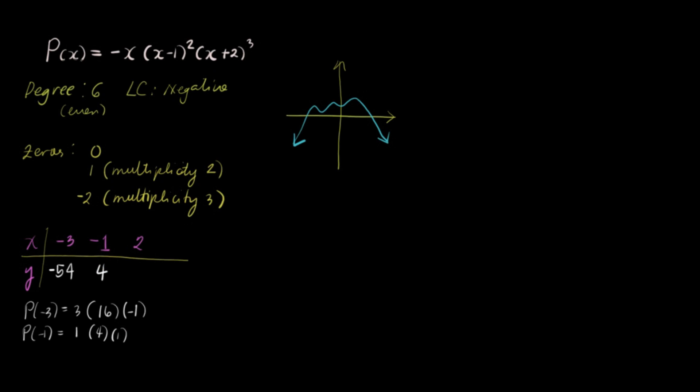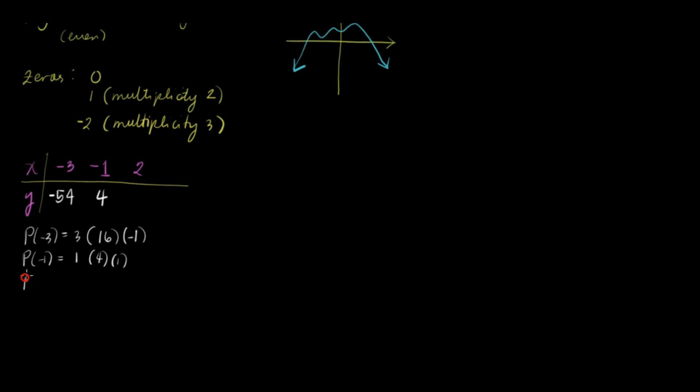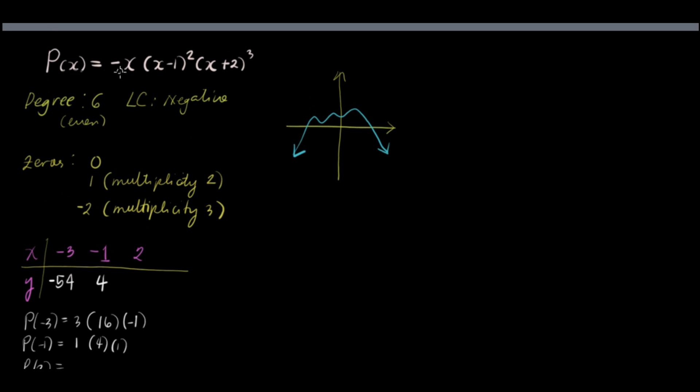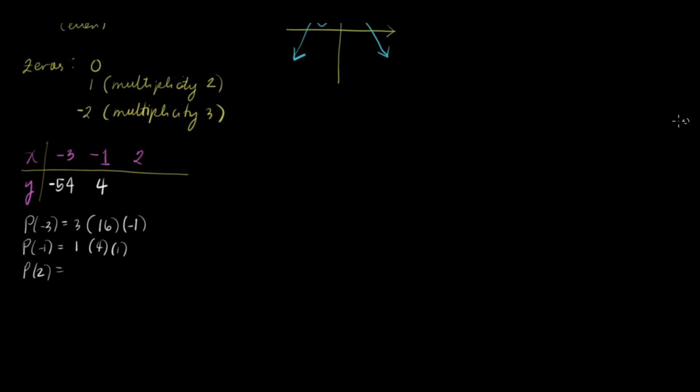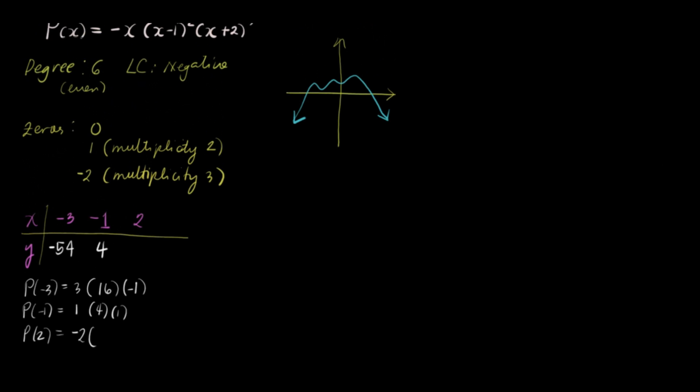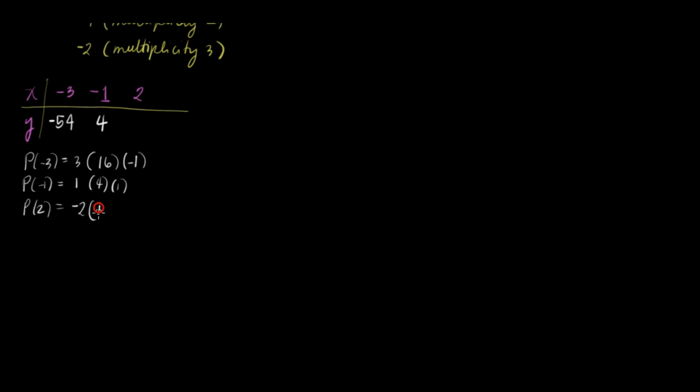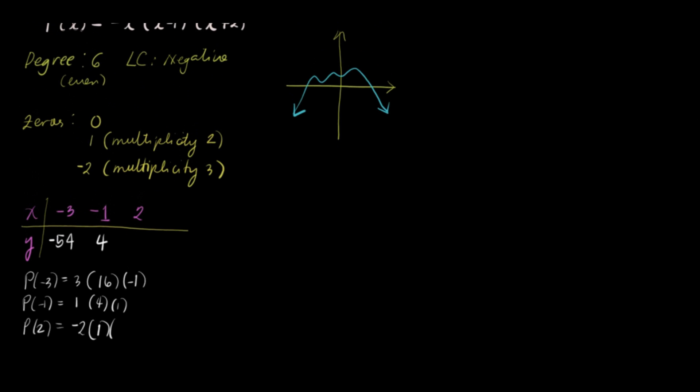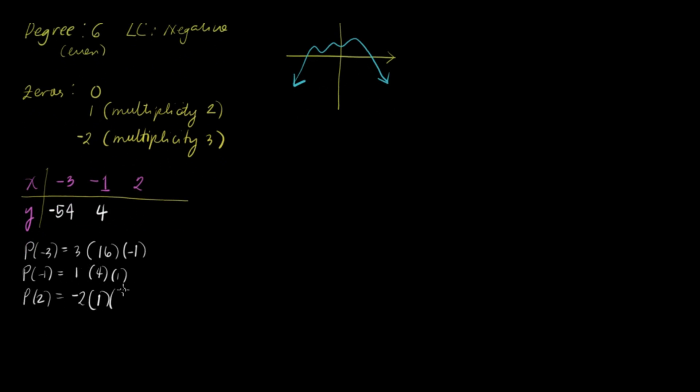Let's have two. P of two. So, P of two is... we have negative two. Negative two times... so we're substituting two. Two minus one is one squared. That's one. And then, lastly, we have two plus two, that's four cubed, is sixty-four. Sixty-four. So, we have negative one hundred twenty-eight. Okay. I think that's enough.